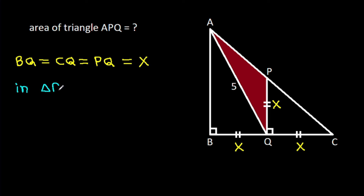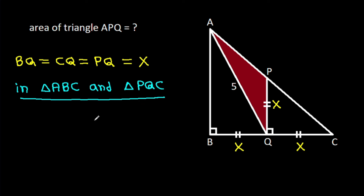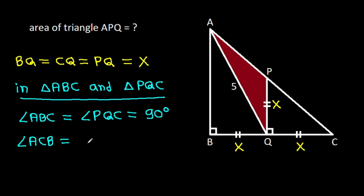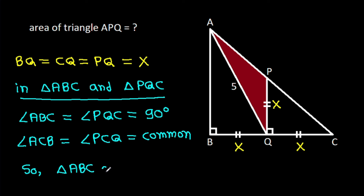In triangle ABC and triangle PQC, angle ABC is equal to angle PQC, that is 90 degrees, and angle ACB is equal to angle PCQ, which is common. So triangle ABC will be similar to triangle PQC.